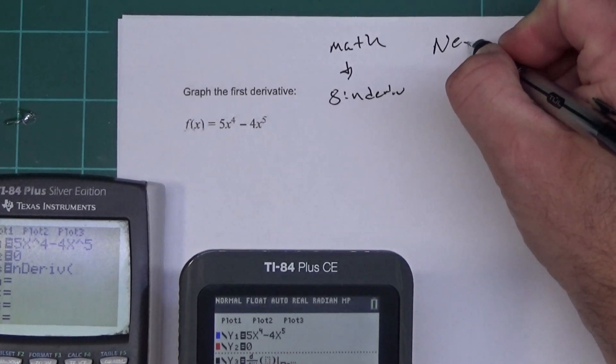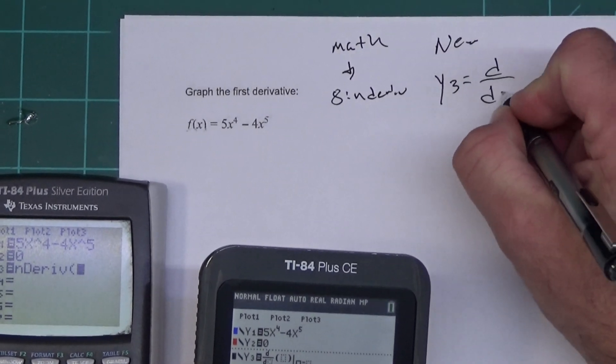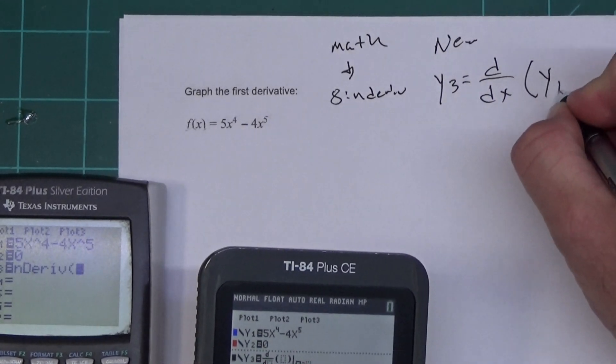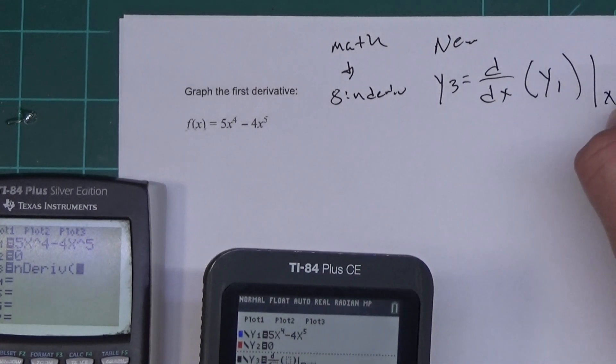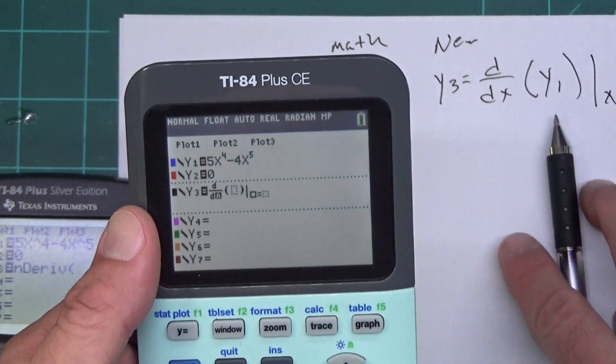And on this one, we're going to press math. We're going to go down to 8 just like the other one. It says nDeriv. You press enter and it doesn't look the same. You're going to type the same things in, however. So on the new calculator, we want our y3 to look like this. D over dx, parentheses here, y1, close parentheses, slash x equals x. So I have to put the x's in. As you can see, they're missing and you have to put the y1 in.